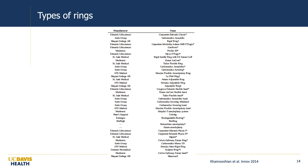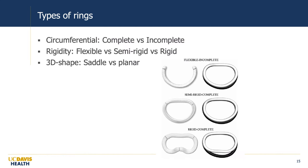There have been many types of surgical rings developed over the last several decades by different companies and surgeons, many named after the surgeons who developed them. We think of rings in a few categories: complete or incomplete — either circumferential or open; their rigidity — flexible band, semi-rigid, or rigid; and finally whether they're planar or have a more complex saddle shape, or in some cases a very aggressive posterior saddle shape.